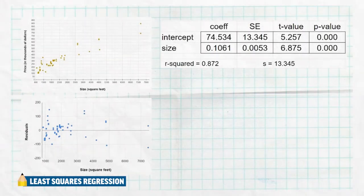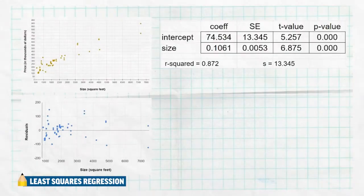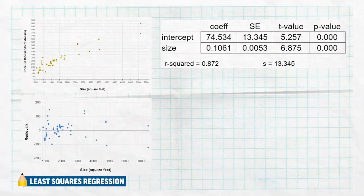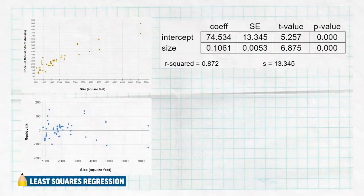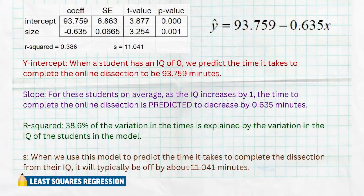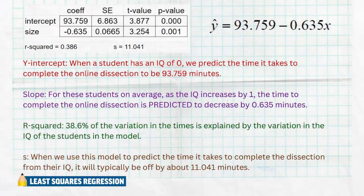The slope is 0.1061. Make it a fraction — 0.1061 over one. This tells us that for every one square foot that a house is bigger than another, we would predict the price to increase by 0.1061 thousands of dollars. Since it's in thousands, convert by moving the decimal three times — that's about $106. So for every one square foot that a house gets bigger, we would predict the price to increase by about $106.